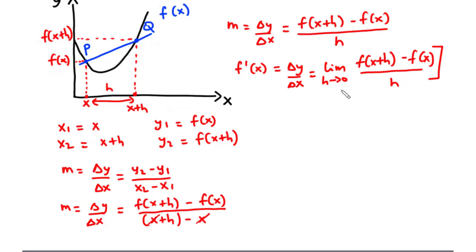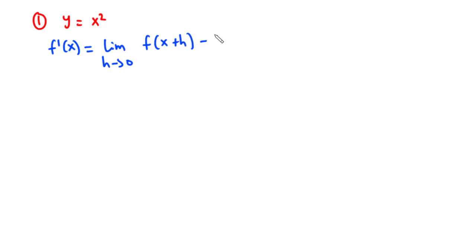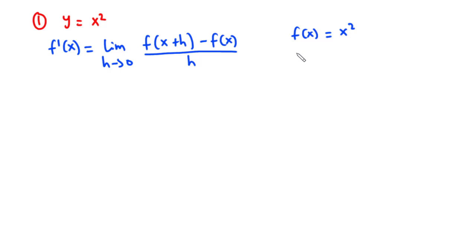Using this formula we are going to solve a number of examples. From first principles we are going to find the first derivative of the function y equals x squared. We know that f prime of x equals the limit as h approaches zero of f of x plus h minus f of x divided by h. Let's write the expressions for f of x plus h and f of x.